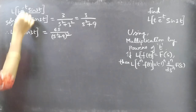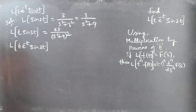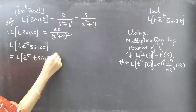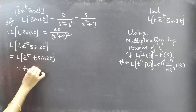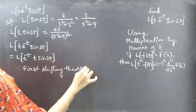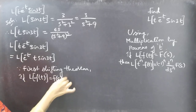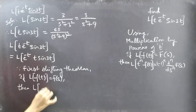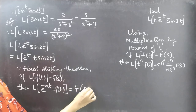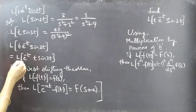Now coming to L of t·e^(-t)·sin 3t. We are going to apply the first shifting theorem. We can write the problem as e^(-t) times t·sin 3t. The first shifting theorem says that if L of f(t) equals F(s), then L of e^(-at)·f(t) equals F(s plus a).